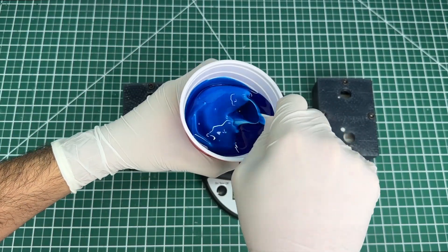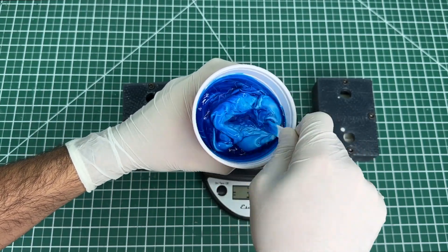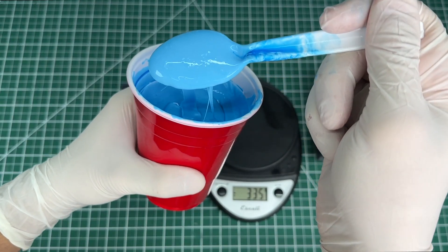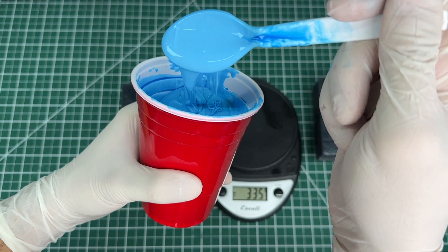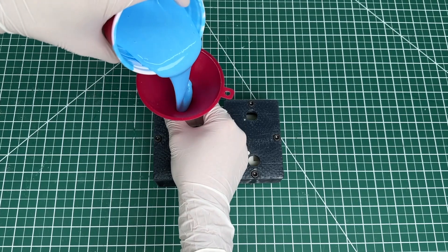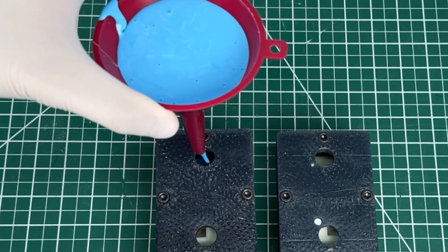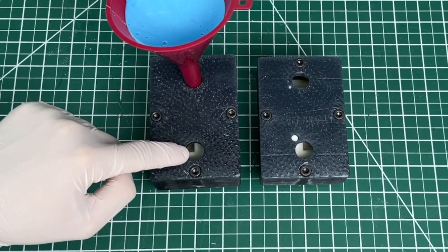Once we start mixing, we have a total of 15 minutes before this starts to harden, so we have to work quickly. Two minutes later, the liquid is ready to be poured directly into the molds. We found the best way to do this is using a funnel as trying to pour directly from the cup can leave you with a mess.